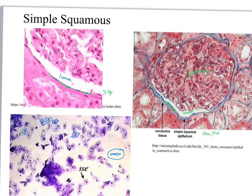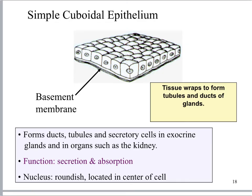Let's move on to the next tissue type. Simple cuboidal epithelium is cube-shaped — simple means one row, cube-shaped cells as we see here. Where do you find them? In tubes, ducts, and secretory cells. What you need to memorize about function: absorption and secretion.